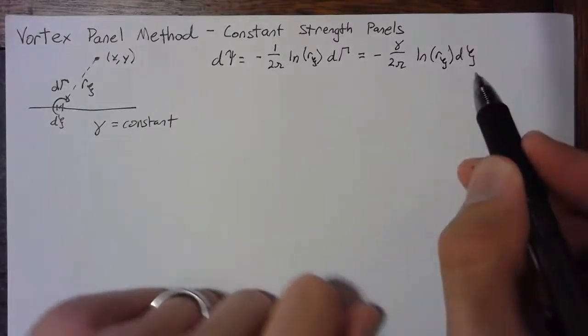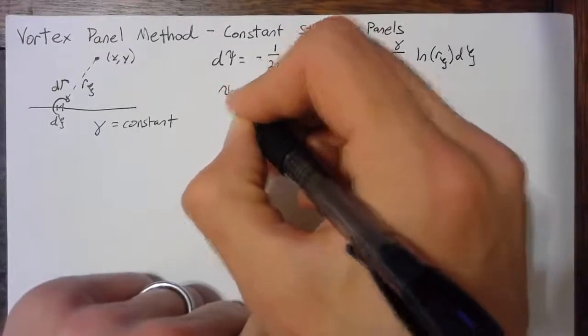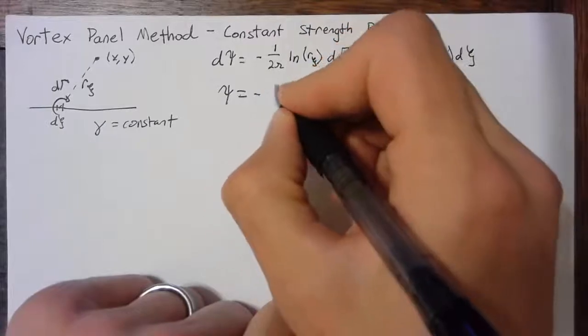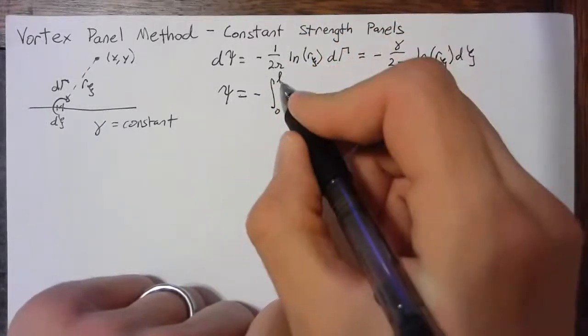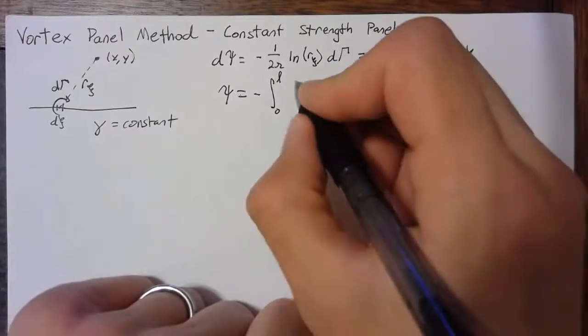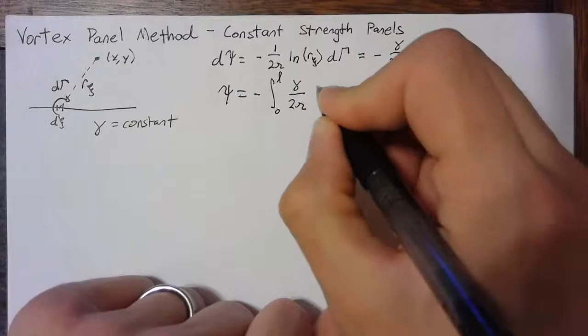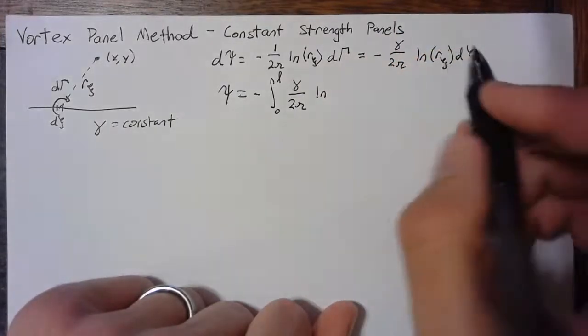Now we need to integrate this over xi. Psi is equal to negative integral from 0 to L, which is the length of our panel, of gamma over 2 pi times the natural log of this r xi term.